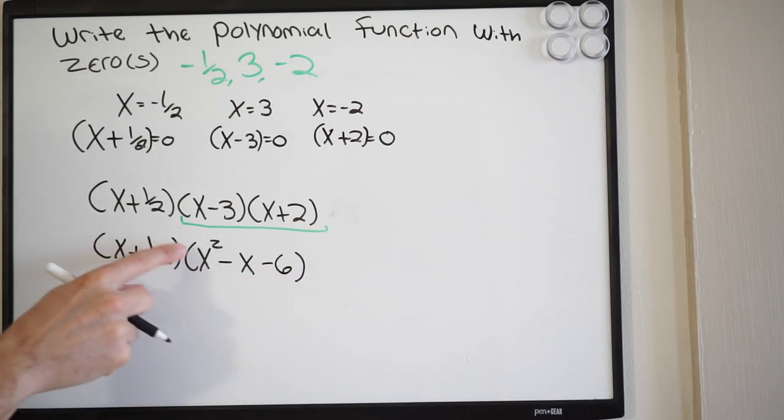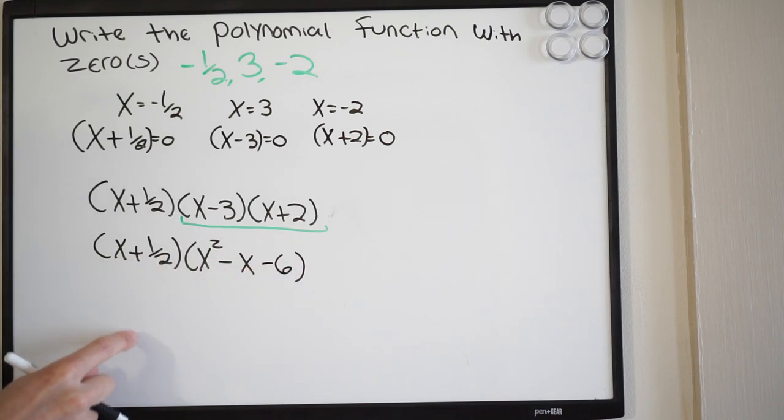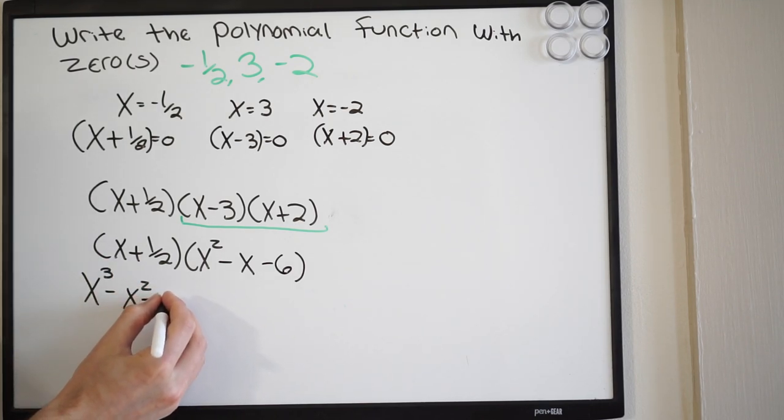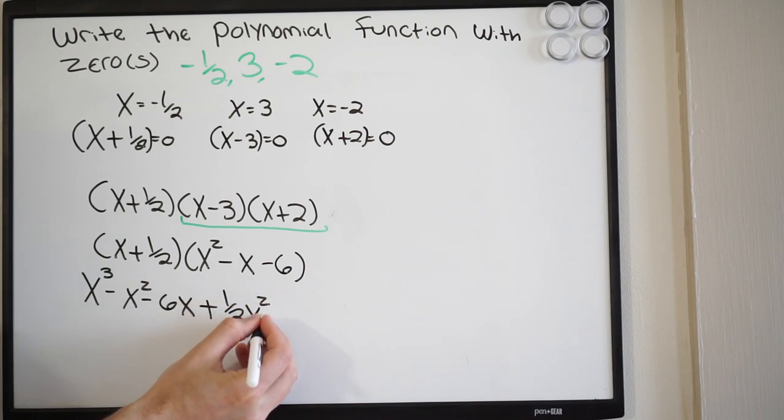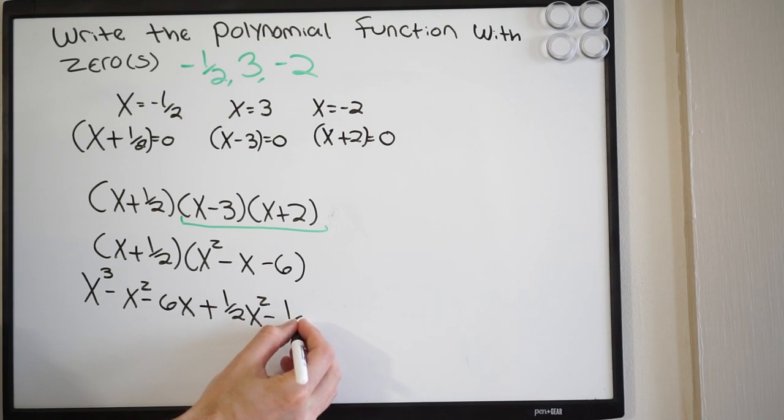And we simply just go ahead and distribute this x to each term over here, and the same thing with the half. We distribute it to each term there. So let's do that. This will be x to the third power, and this will be negative x squared, and then we'll have negative 6x. Now moving on to the half, we get plus one half x squared, then we get minus one half x. And then we get, well, a half and a negative 6, that will make negative 3.